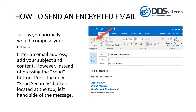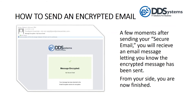However, instead of pressing the Send button, press the new Send Securely button located at the top left-hand side of the message. A few moments after sending your secure email, you will receive an email message letting you know the encrypted message has been sent.